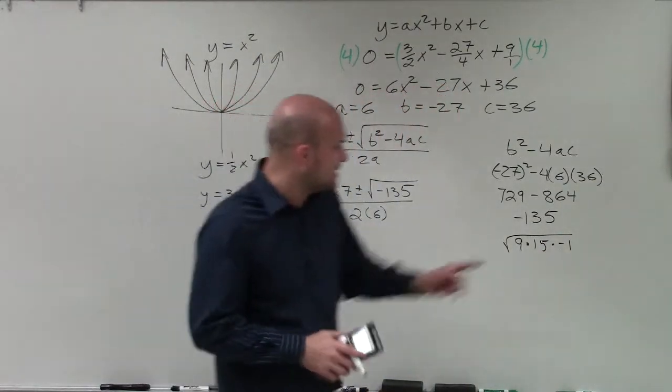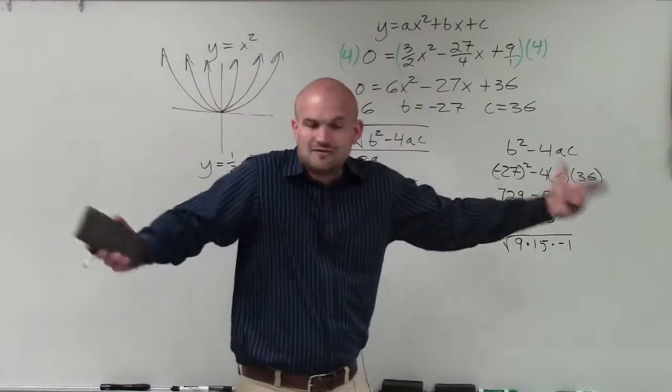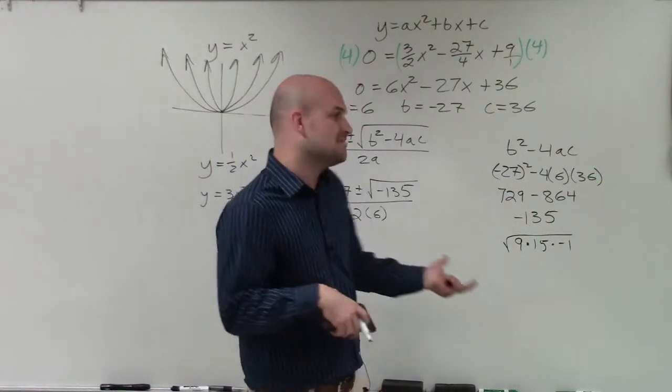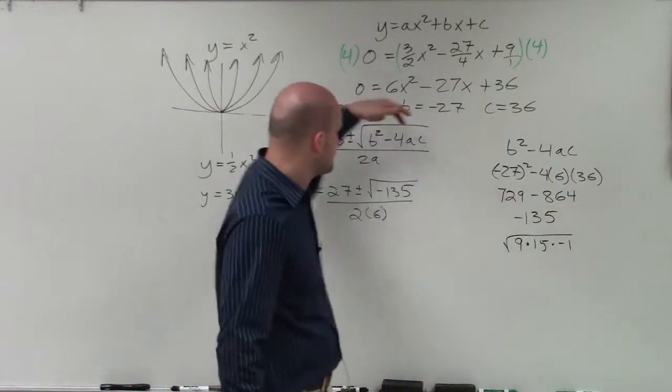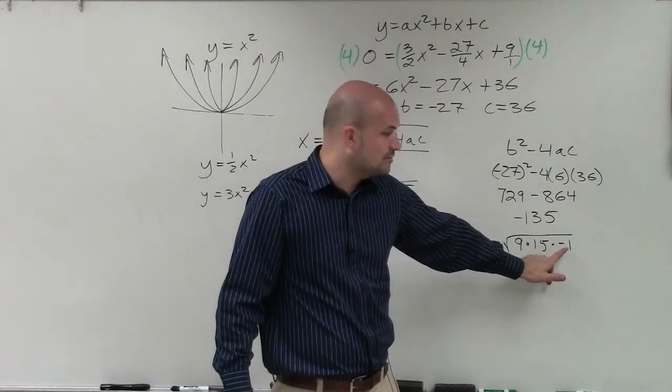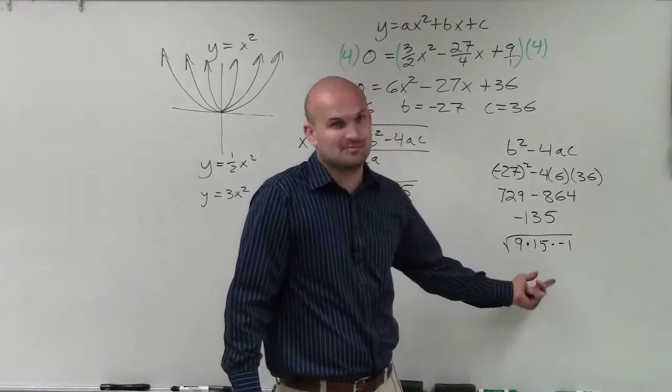So I can break this up into 9 times 15 times negative 1. And again, the reason why I break that up is I want to simplify this as much as possible. If you're just in algebra 1, there's no solutions. You don't worry about it. But once you get into the complex number system, we understand that we can break the square root of a negative number into multiplying it by the square root of negative 1. And then, obviously, we want to simplify the radical.